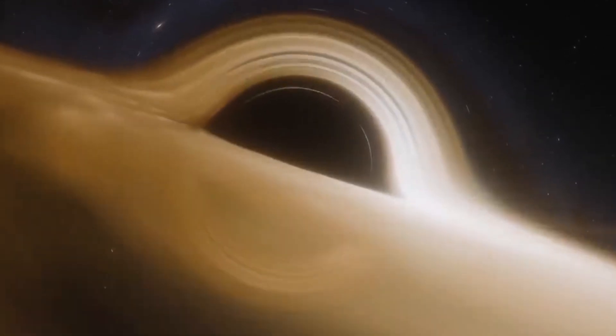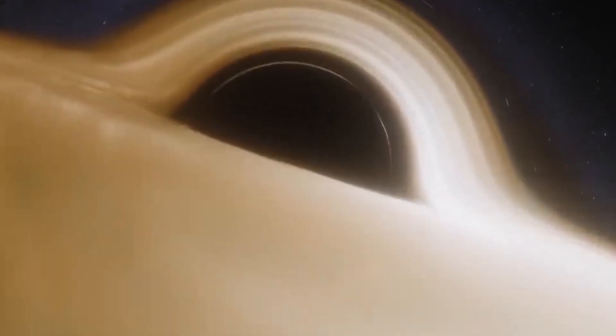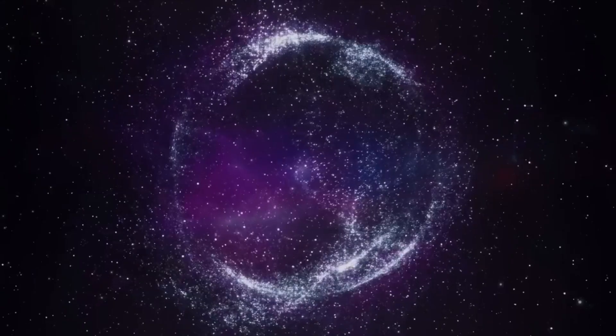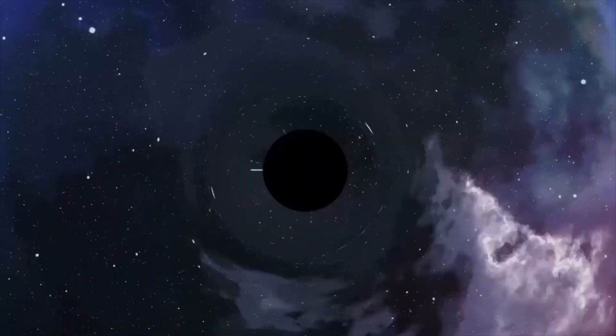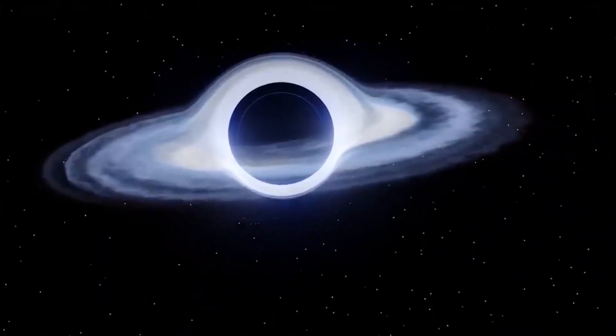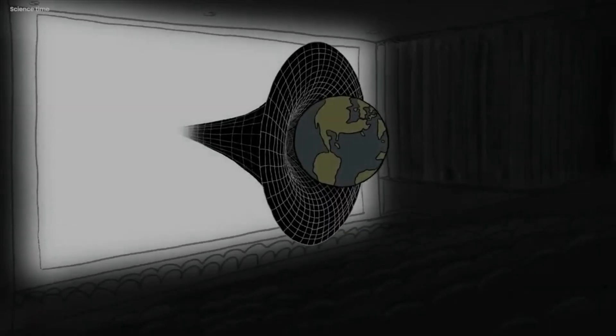What about the past? This is where things get truly interesting. A black hole bends time so much that it can wrap back on itself. Imagine taking a sheet of paper and joining the two ends to form a loop. That's what a black hole seems to do to time. This creates a natural time machine.